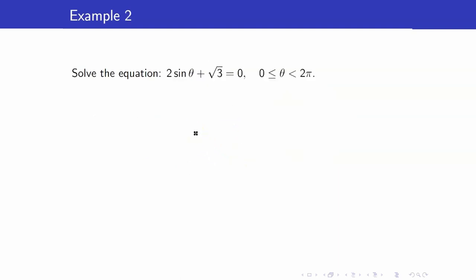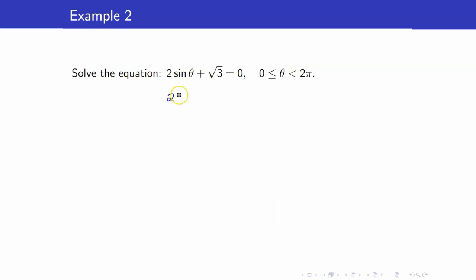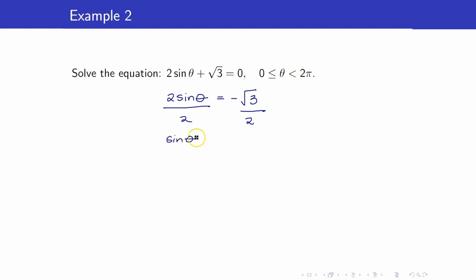Next, we have 2 sine theta plus square root of 3 is equal to 0. Our goal here is to isolate the term involving the trigonometric function, so let's isolate sine theta. We have 2 sine theta is equal to negative square root of 3. Dividing both sides by 2, we get that sine theta is equal to negative square root of 3 over 2.